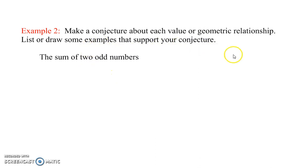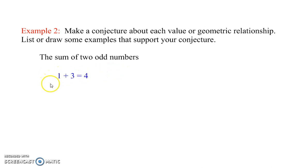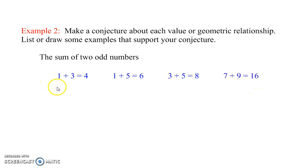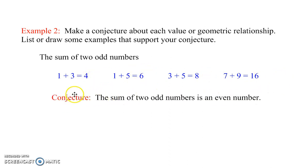Make a conjecture about each value or geometric relationship. List or draw some examples that support your conjecture. The sum of two odd numbers: 1 plus 3 is 4, 1 plus 5 is 6, 3 plus 5 is 8, 7 plus 9 is 16. What do you notice about the answers? It appears that every answer is even. So it appears that the sum of two odd numbers is an even number, based on our few examples.